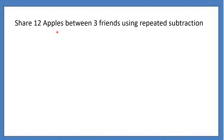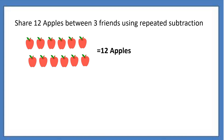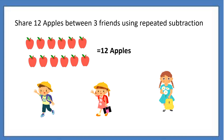The question is: share 12 apples between 3 friends using repeated subtraction. So 12 apples are to be shared among 3 friends — Rohit, Anna, and Sheba. 12 divided by 3.